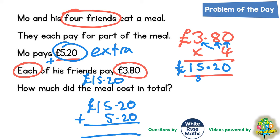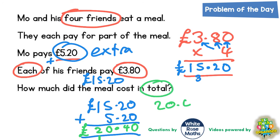A lot of people will probably be able to do that in their heads and get £20.40, but let's just double check. 0 add 0 is 0, 2 add 2 is 4, 5 add 5 is 10 — put the 0 in and carry the 1 — and 1 plus the 1 carried is 2. That confirms our answer of £20.40. Don't forget to put your decimal point in and your pound sign. Final answer: £20.40 — that's the total.